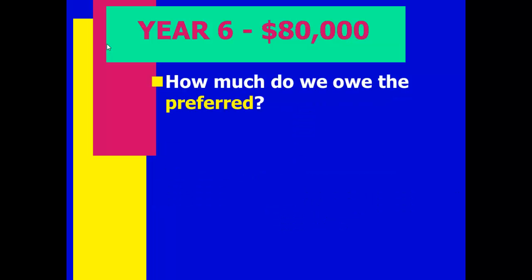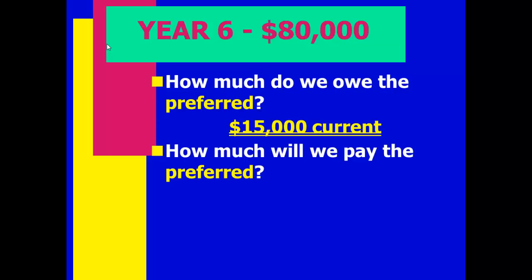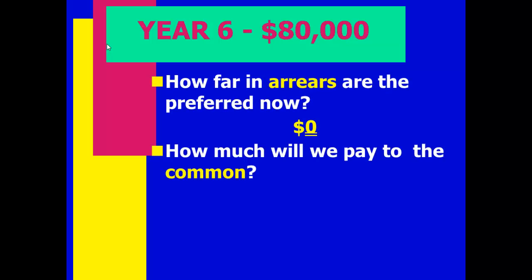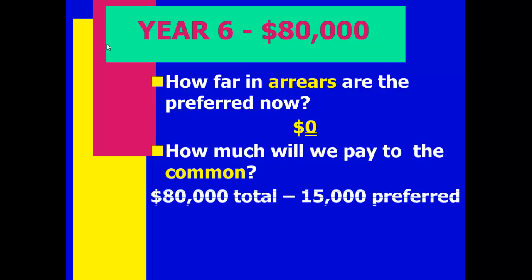Year 6: We have $80,000. We only owe the current year amount of $15,000. We pay them $15,000 with zero in arrears. Common gets $80,000 minus $15,000 equals $65,000. When times were bad, all money went to the preferred. When times are great, the preferred get their $15,000 and the common stockholders make a lot — they have residual ownership with no minimum and no maximum dividends.